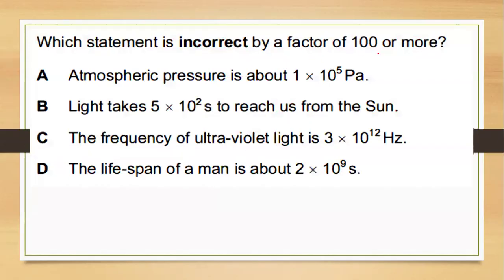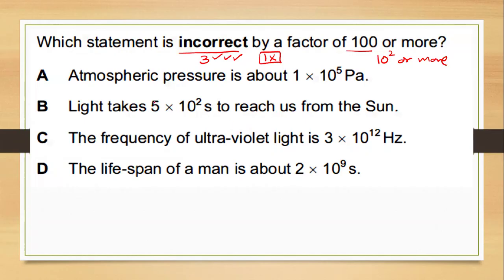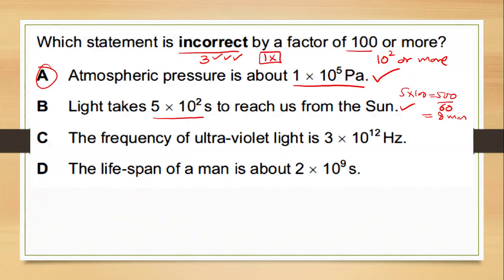The question asks: which statement is incorrect by a factor of 100 or more? Three will be correct and only one will be incorrect. First: atmospheric pressure is 1 × 10⁵ Pa — absolutely correct. Second: light takes 5 × 10² seconds to reach us from the Sun. That is 500 seconds, and 500 ÷ 60 ≈ 8 minutes — correct, since we know it is about 8 minutes. Third: the frequency of ultraviolet light is given as 3 × 10¹². Fourth: the lifespan of a man is 2 × 10⁹ seconds.